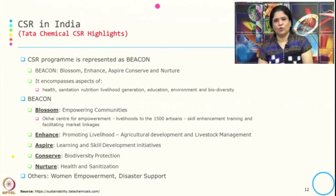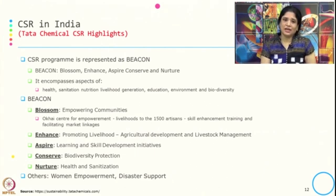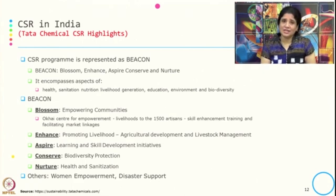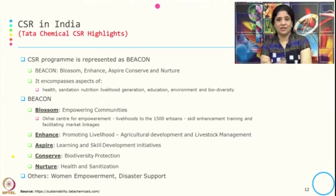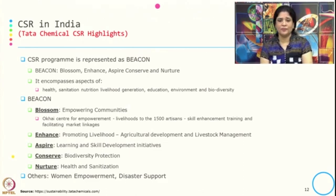Under Blossom, they have created the Okhai Centre for Empowerment, which provides livelihood to 1,500 artisans through skill enhancement training and facilitating market linkage — a successful platform where sales of handicrafts are increasing. Under Enhance, they promote livelihood, agricultural development, and livestock management. Aspire focuses on learning and skill development initiatives. Conserve focuses on biodiversity protection, Nurture on health and sanitation, and apart from this they focus on women's empowerment and disaster support.